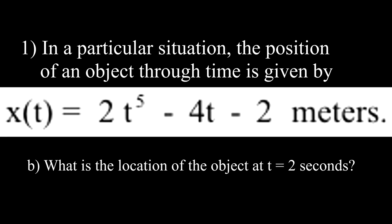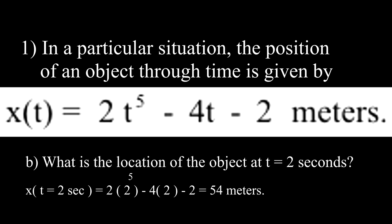Question B. What is the location of an object at t equal to 2 seconds? Setting t equal to 2 in the equation for x, we get 54 meters.